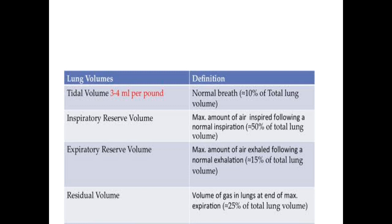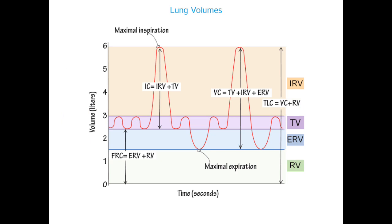The next is inspiratory reserve volume (IRV). This is the maximum amount of air inspired after a normal tidal volume inhalation, and accounts for about 50 percent of total lung volume — the largest individual lung volume. Normally we take in tidal volume; the extra air taken in beyond that is the inspiratory reserve volume. On the spirogram, after tidal volume the line goes up to maximal inspiration — that region is the IRV, which is 3000 ml. Adding tidal volume and IRV gives us the inspiratory capacity of approximately 3500 ml.